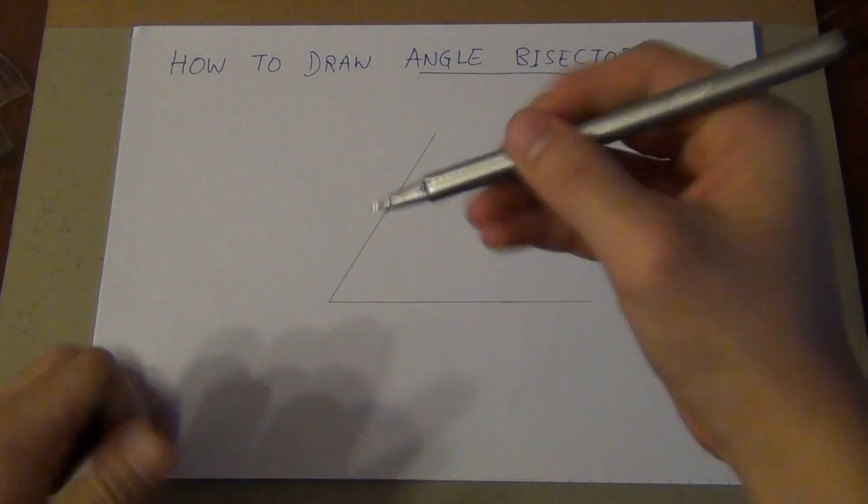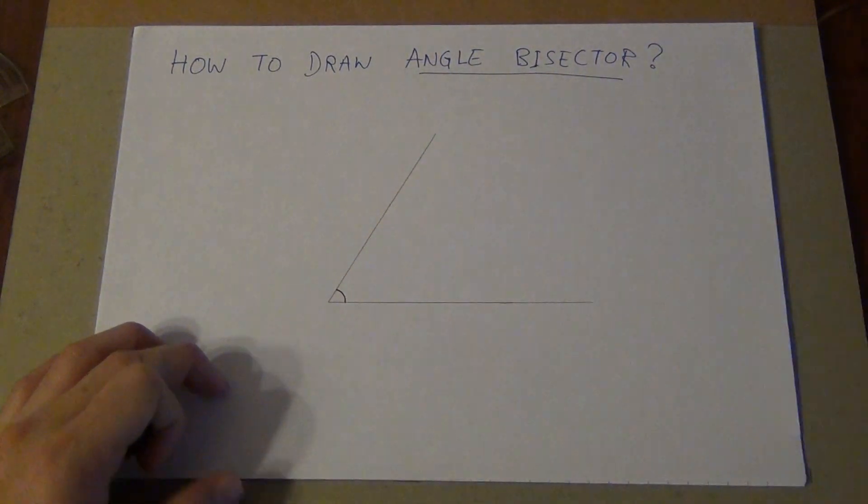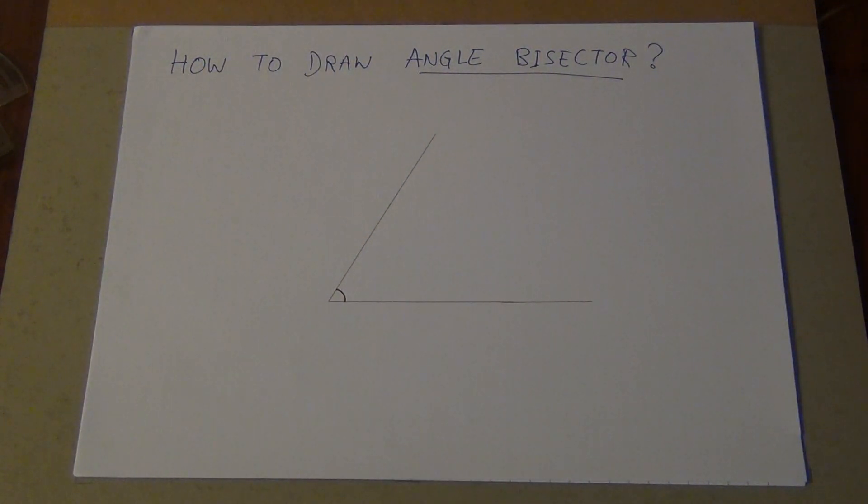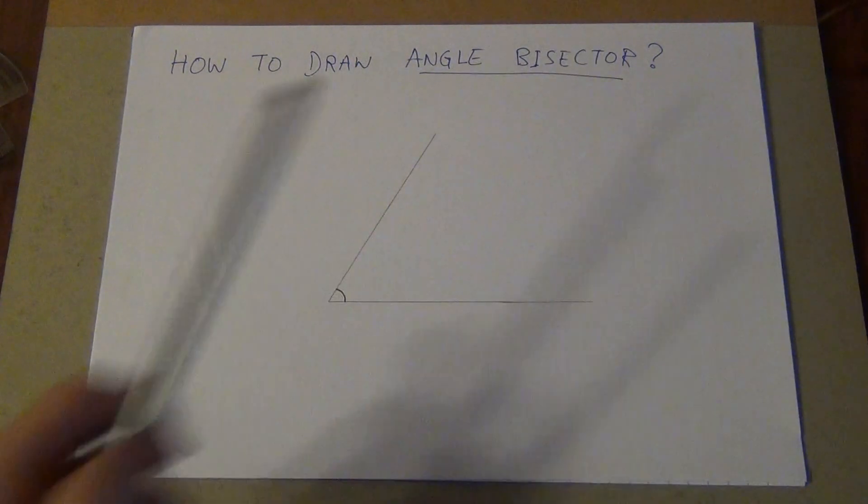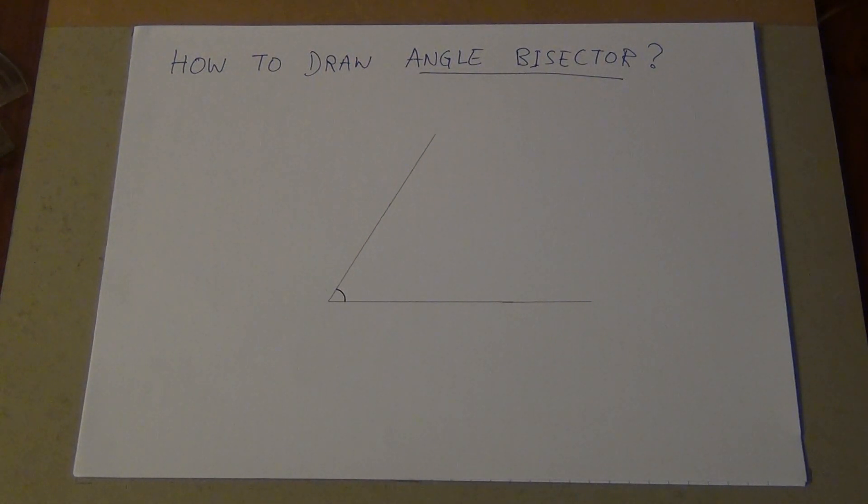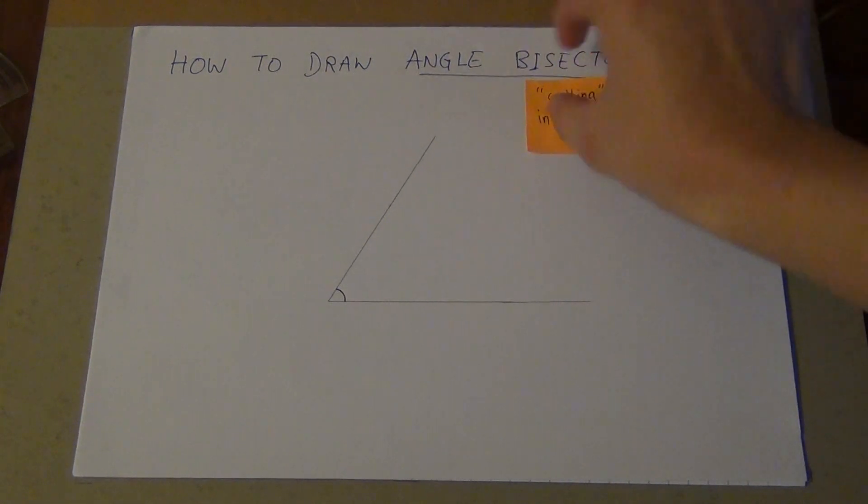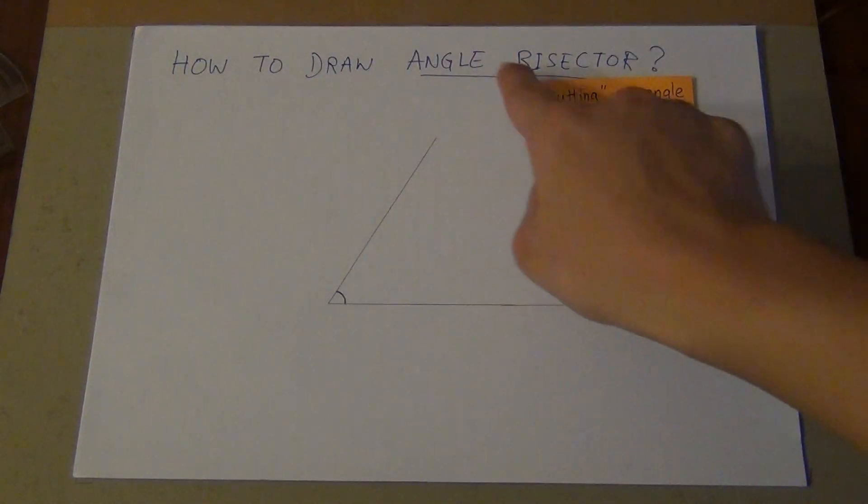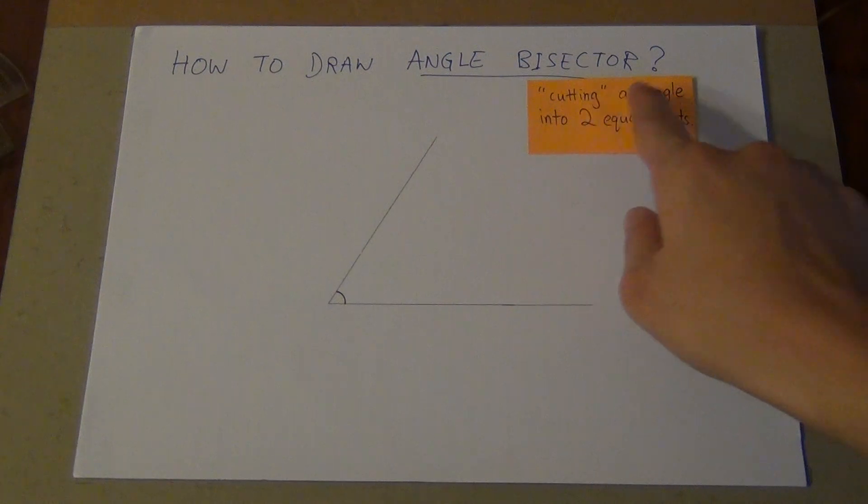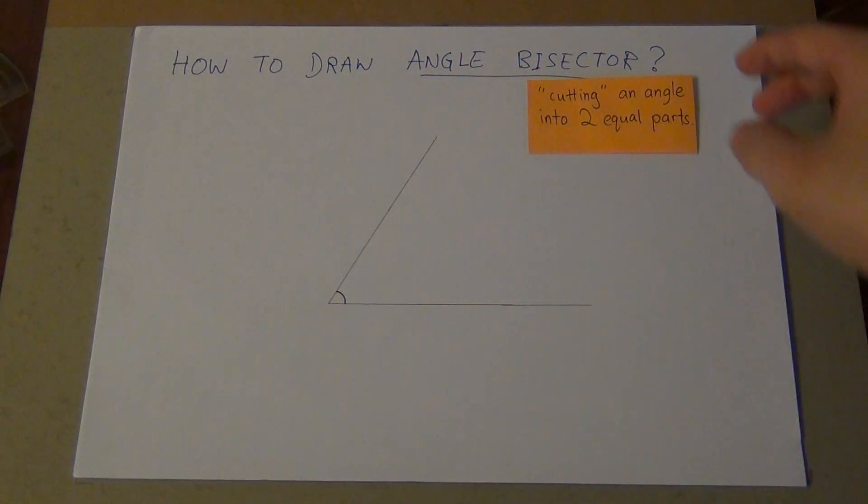So now what is a bisector? A bisector means that it is going to cut this angle into two equal parts. Angle bisector means cutting an angle into two equal parts.